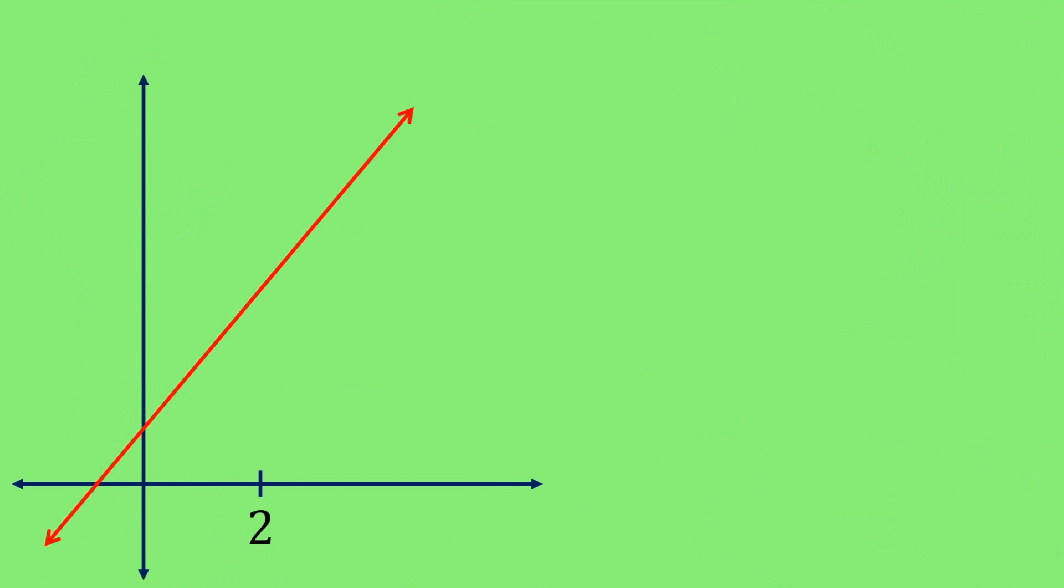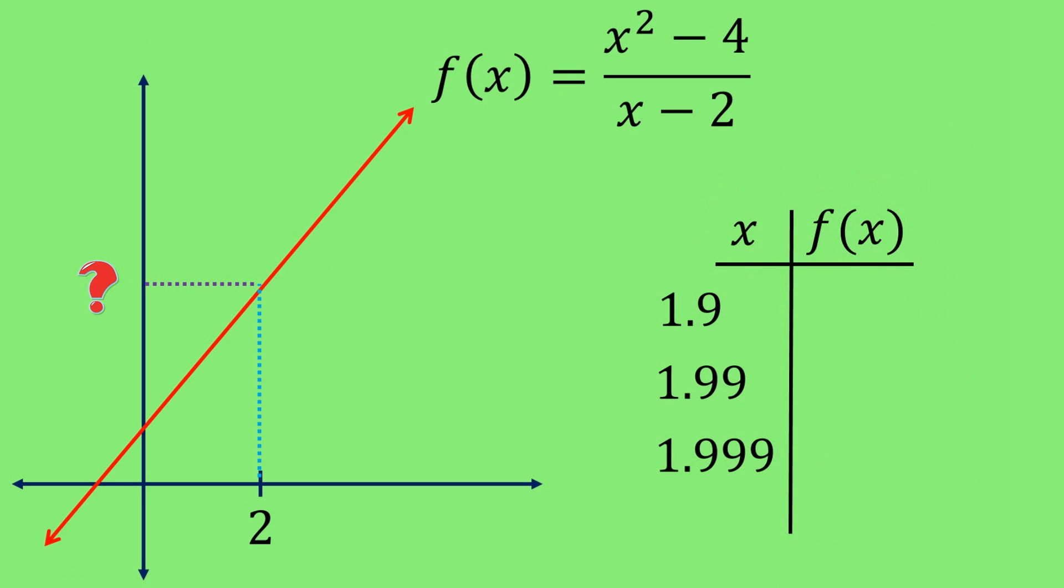Let's see how this works with yet another function. Let's go ahead and use x squared minus 4 all divided by x minus 2. Like before, we are interested in what value the function approaches as we use x values close to 2. Let's go ahead and choose some inputs like 1.9, 1.99, and 1.999.